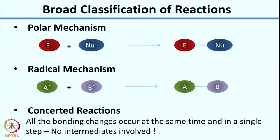One type of mechanism is a polar mechanism. In a polar mechanism, just like the name suggests, you have two intermediates which are charged — one positively charged and one negatively charged — and they come together to give your product. The second is a radical mechanism, where you do not have charged intermediates but radicals which come together to give your product. The third is concerted reactions, where all bonding changes occur at the same time and there are no intermediates involved.